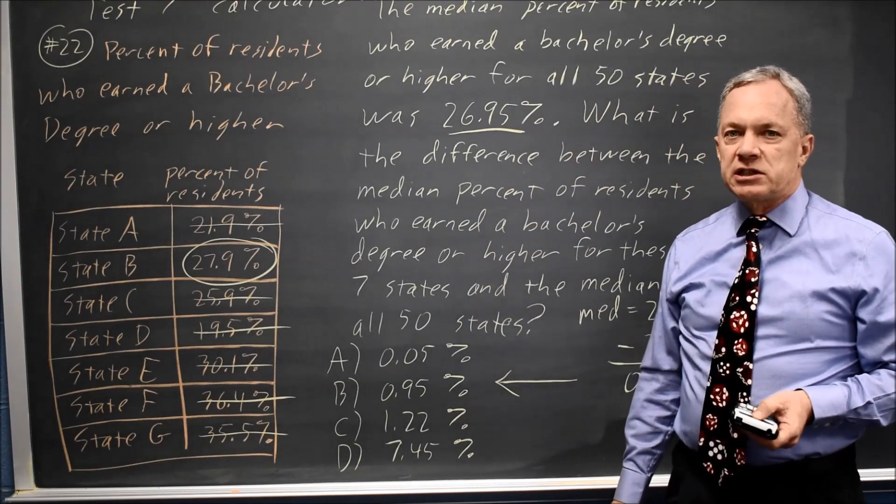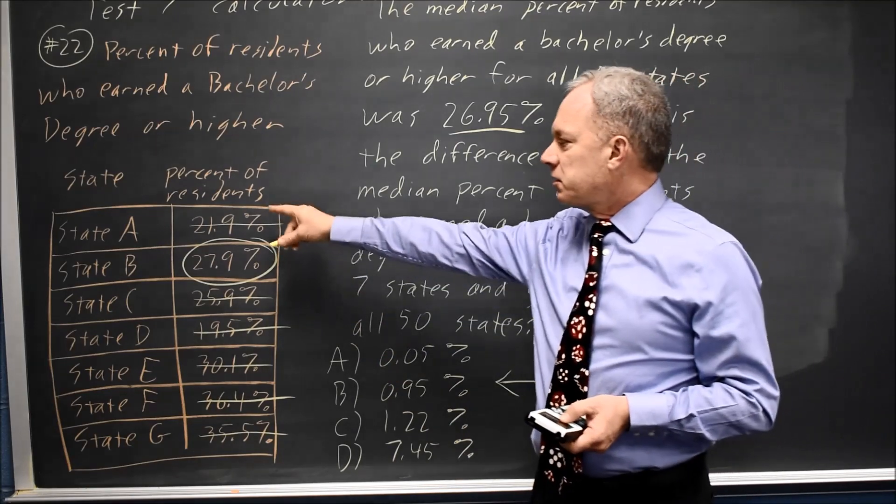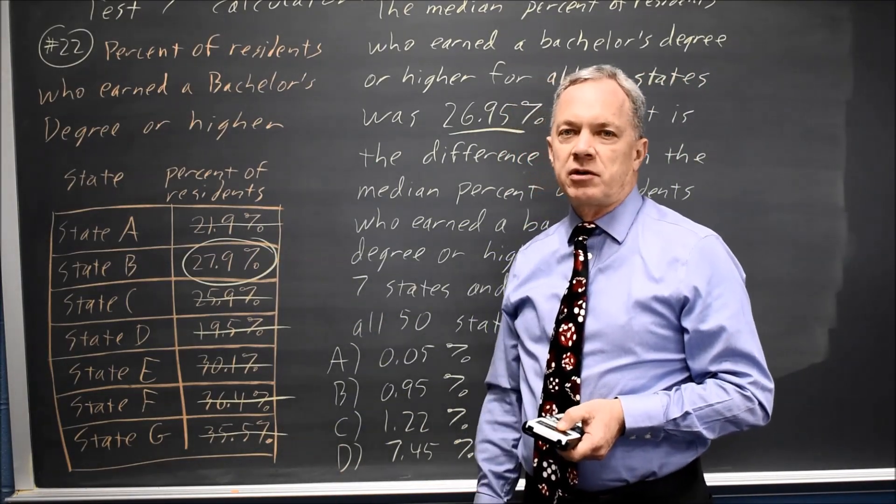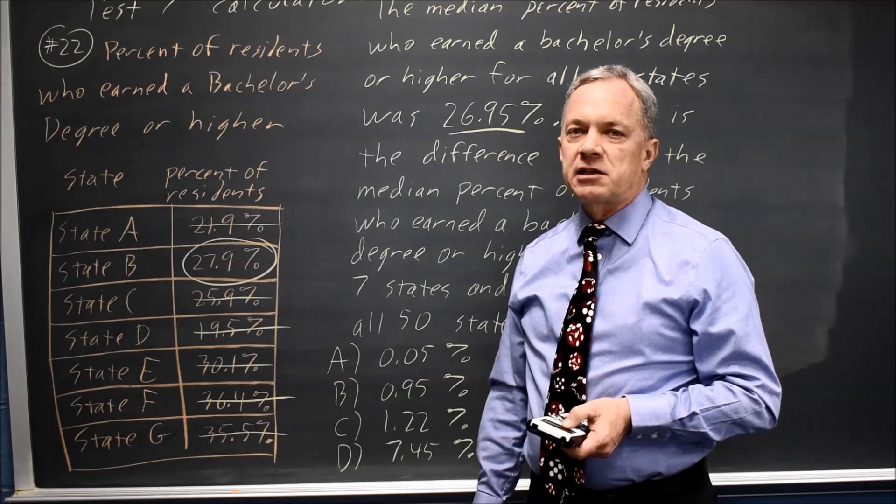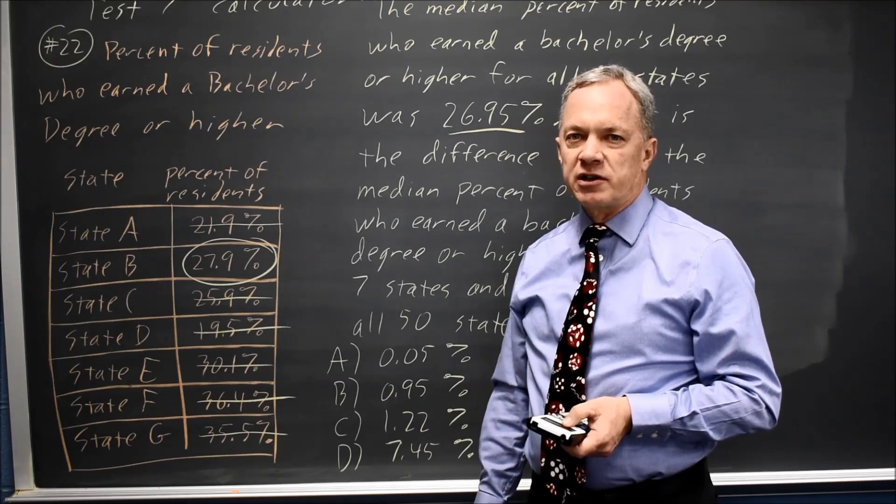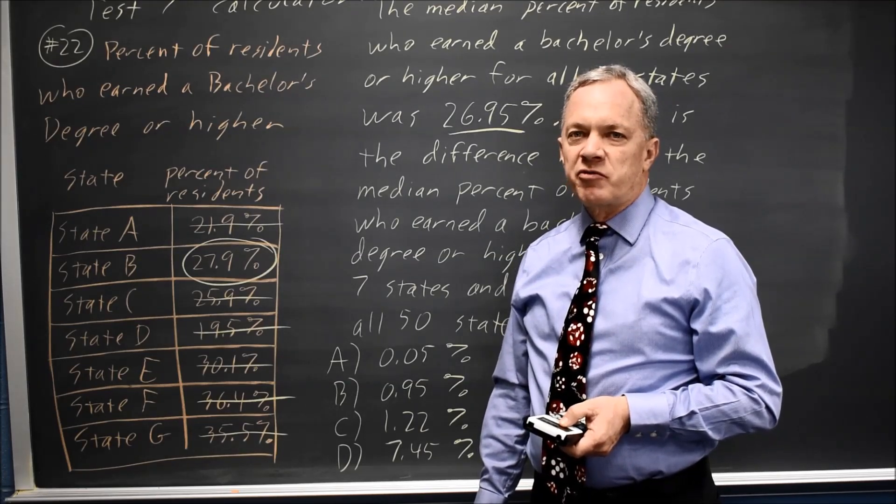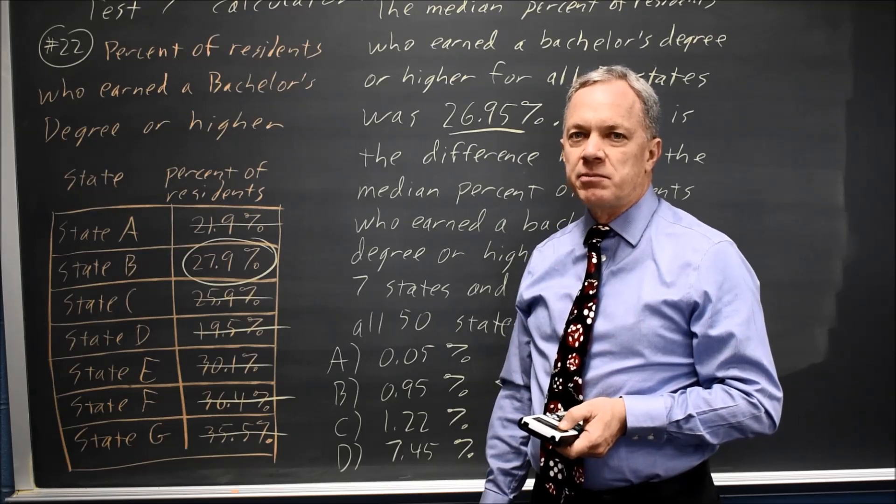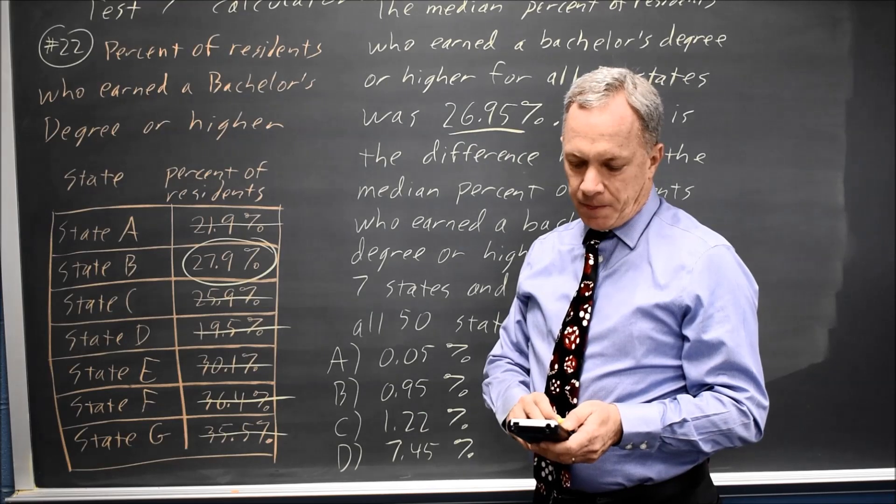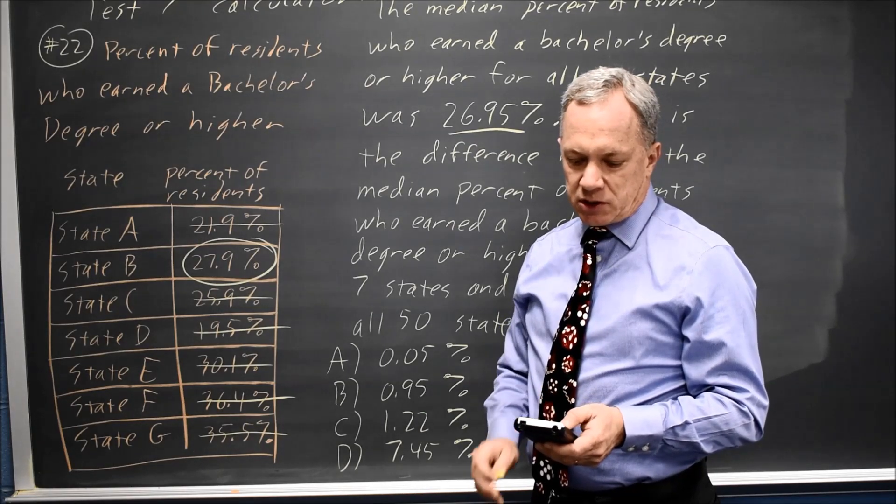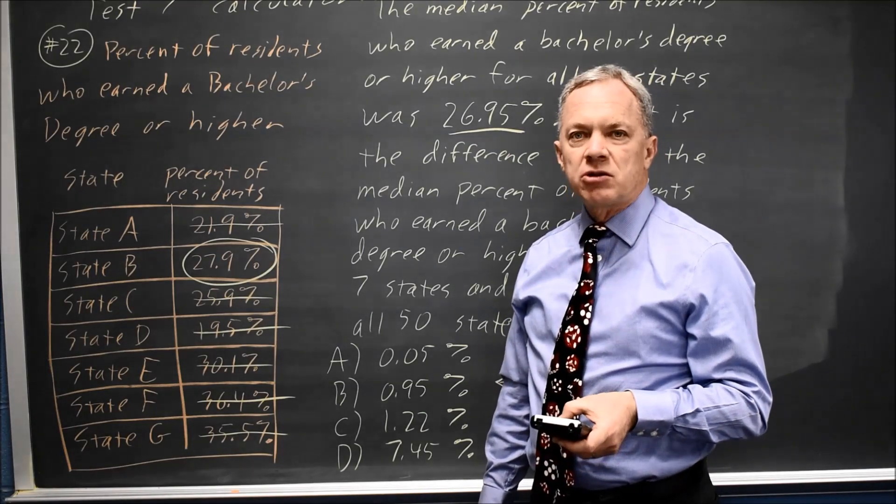Alternatively, I could go to Stat, Edit, and enter these 7 values into list 1. Then use Stat, Calc, 1-Var Stats to calculate one variable statistics. This gives me the mean as x-bar equals 28.17, but that's not what we want.